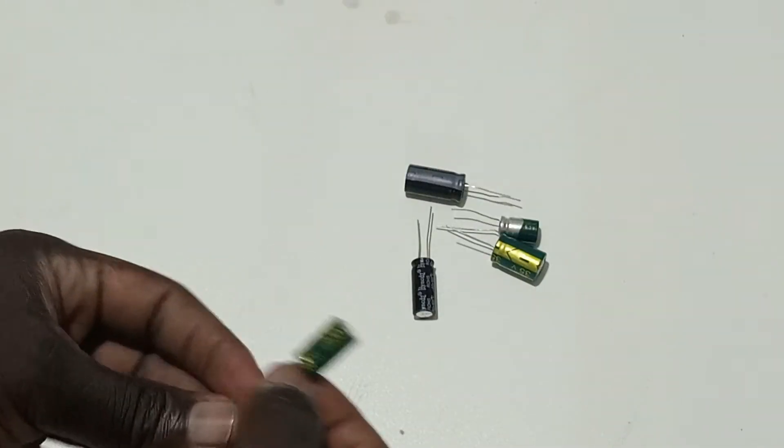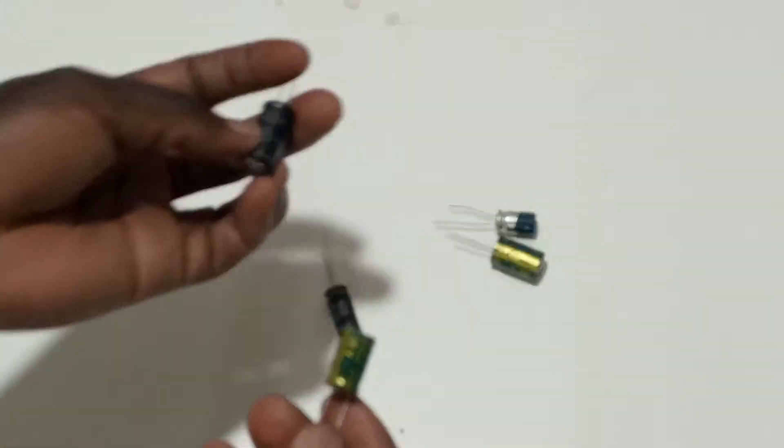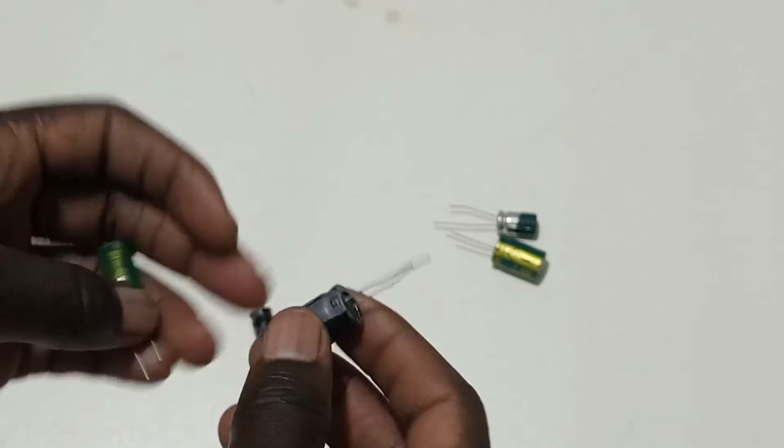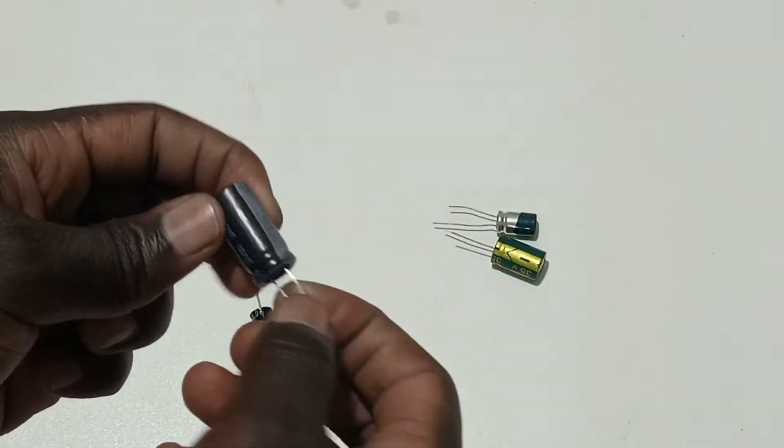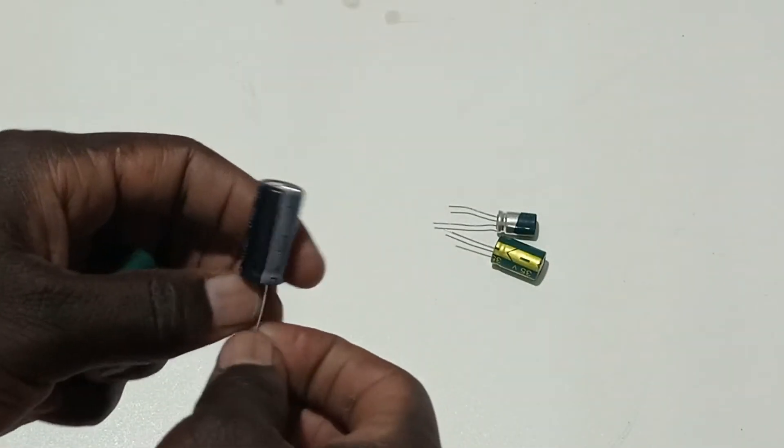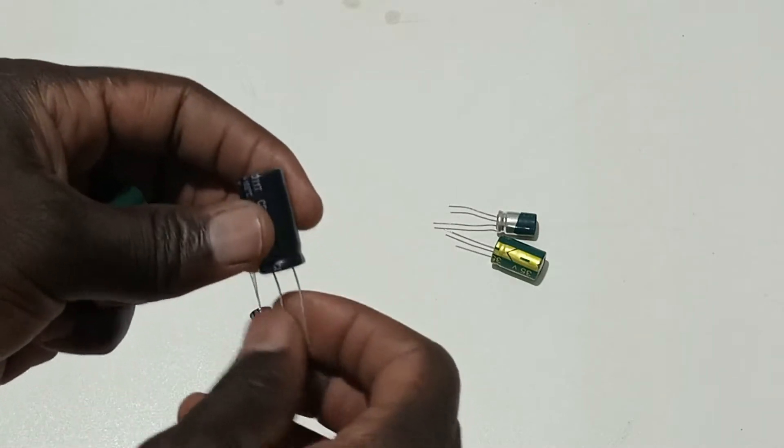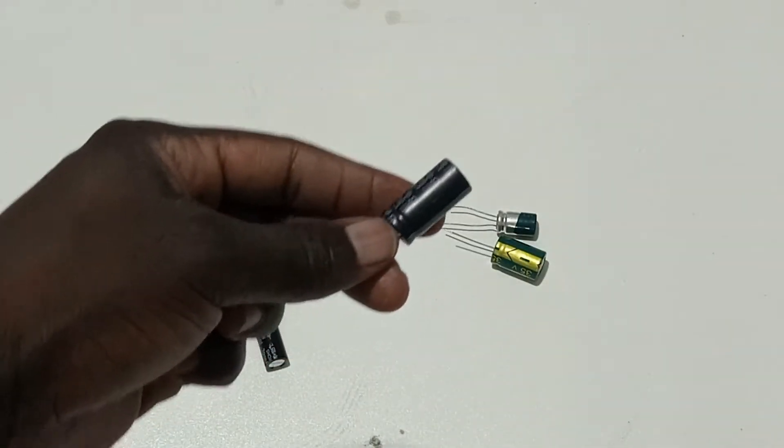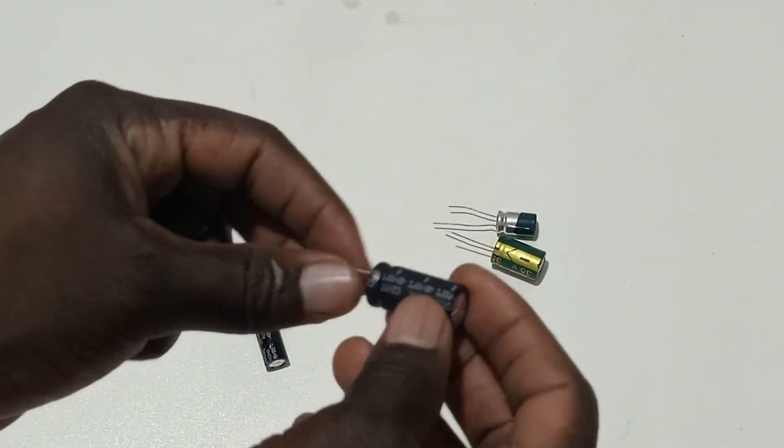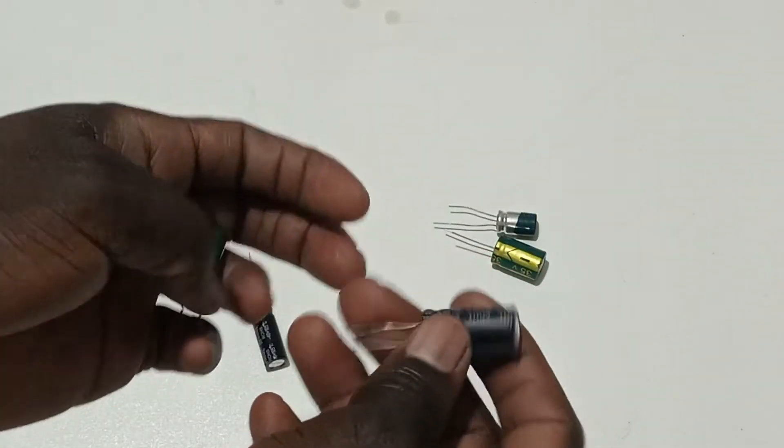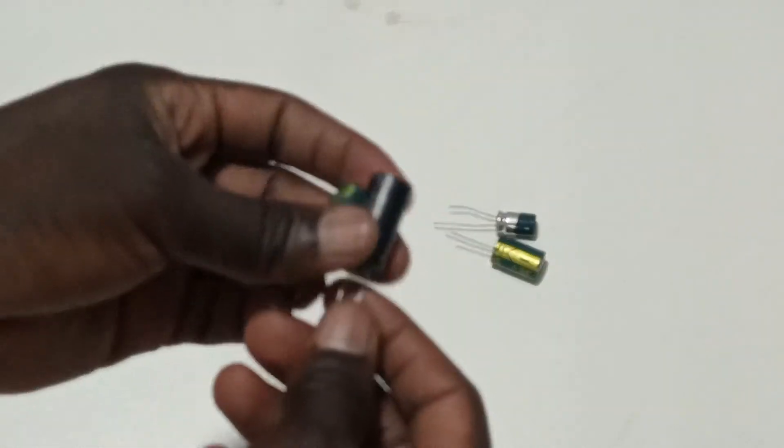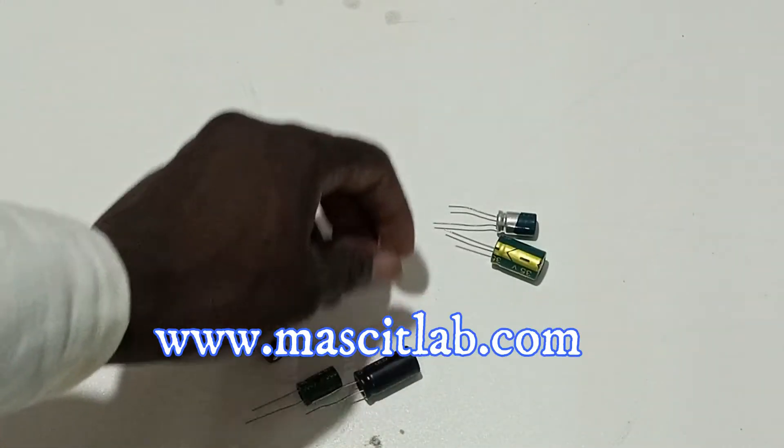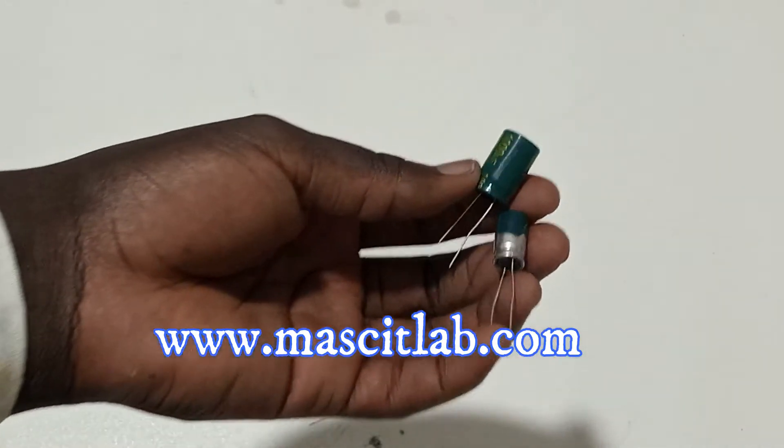Capacitors are used in different ways, in tuning in radios, can be used in smoothening during rectification, can also be used in timing when connected to the LDR, because they charge and discharge at regular time. Many more uses of a capacitor, as I've mentioned, you can be able to find from our website.